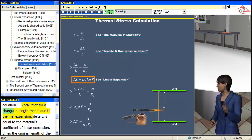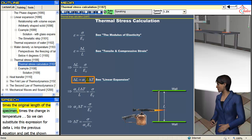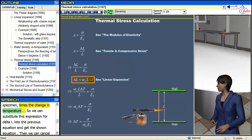Recall that for a change in length that is due to thermal expansion, ΔL is equal to the materials coefficient of linear expansion times the original length of the specimen times the change in temperature.